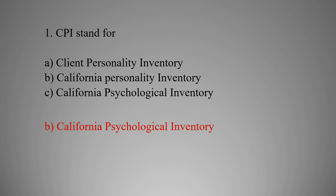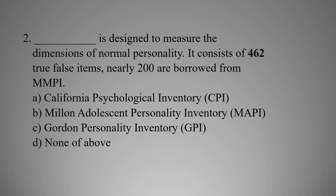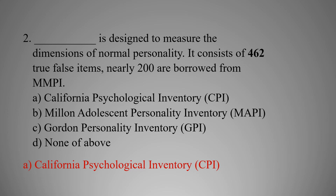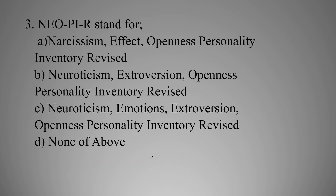MCQ number two: This test was designed to measure the dimensions of normal personality. It consists of 462 true-false items, and nearly 200 are borrowed from the MMPI. Option A: California Psychological Inventory (CPI), Option B: Millon Adolescent Personality Inventory (MAPI), Option C: Gordon Personality Inventory (GPI), Option D: None of the above. The right option is A — California Psychological Inventory (CPI).